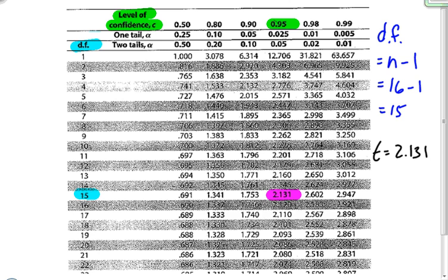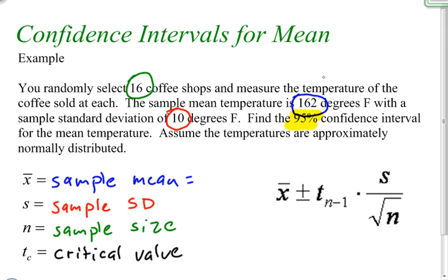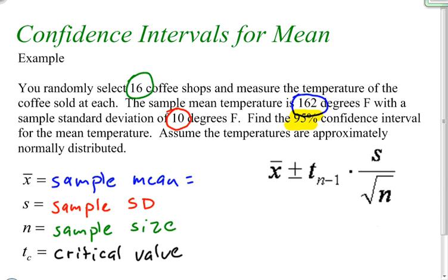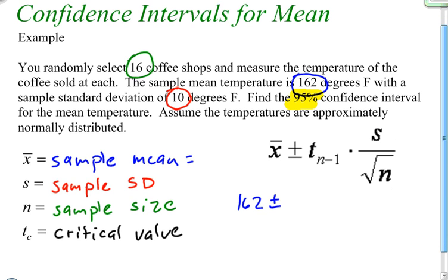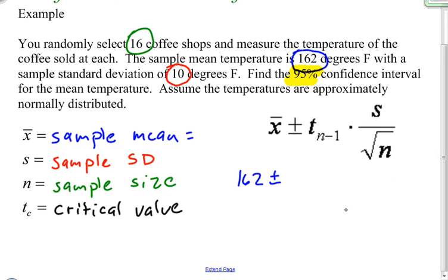So we said that our T value is 2.131. Well, knowing that, let's put everything into this formula. x̄, we know, is 162. And we are going to create an interval by adding something to this 162 and subtracting something from this 162. And it will give us a higher number and a lower number, which creates the interval.